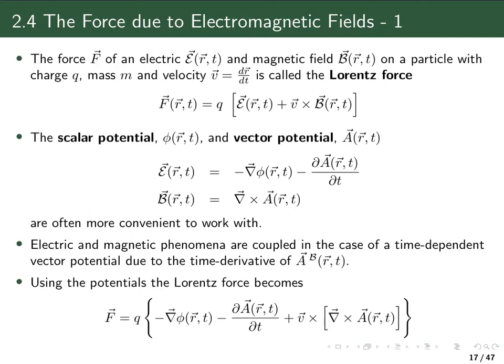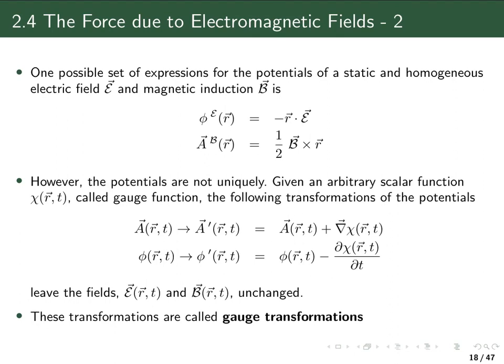The definitions are not unique. Consider the very simple case that we have a static and homogeneous electric field and magnetic induction B. Then one possible solution for the equations relating the potential to the fields is the following: that the scalar potential is just minus the position vector at which we are interested to evaluate it times this homogeneous electric field, whereas the vector potential is a cross product of the constant magnetic field and the position vector.